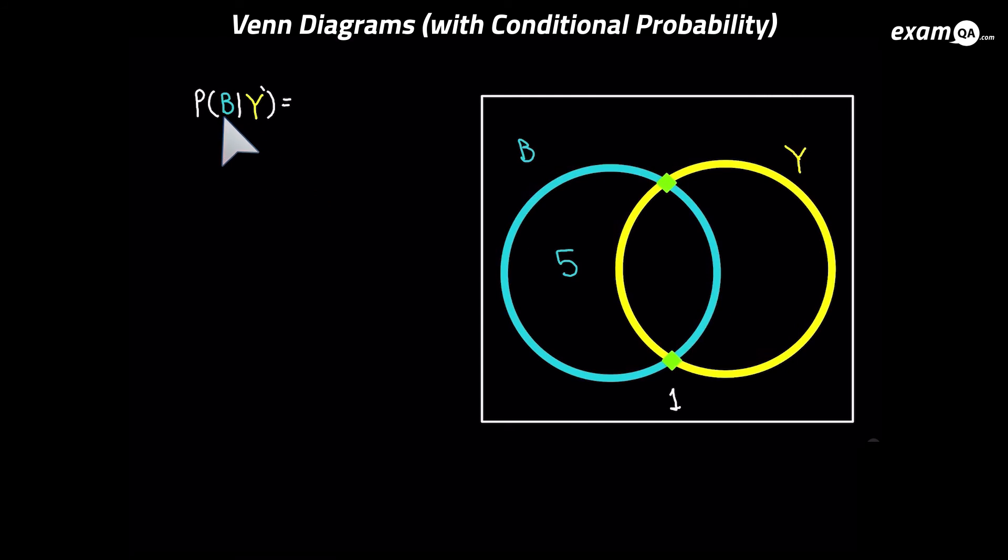Now let's work out the probability of B. So B is just the 5 over the total, which is 6. And there we have it.